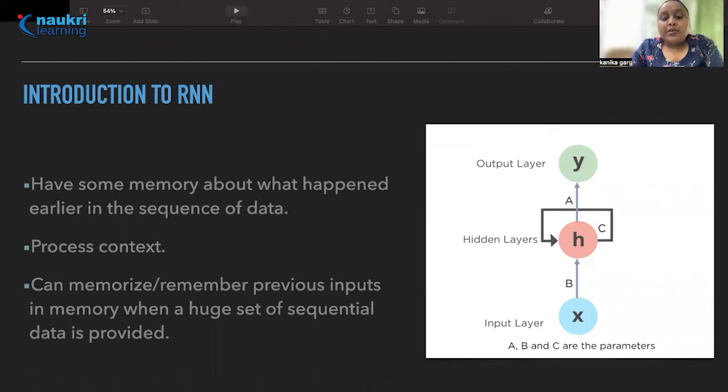RNN has a memory which remembers all the information about what has been calculated. It uses the same parameters for input as it performs the same task on all the inputs or hidden layers to produce the output. This reduces the complexity of the parameters unlike in other neural networks where we have so many biases and weights to remember. As we can see here in the diagram the nodes in the different layers of the neural networks are compressed to form a single layer of recurrent neural network. Here ABC are the parameters of the networks and H represents the hidden layer. The output at any given time is fetched back to the network to improve the output. That is why there is a loop over hidden layer.